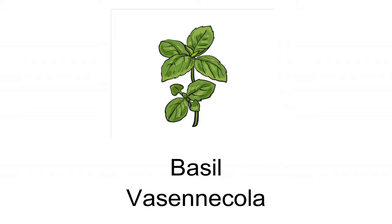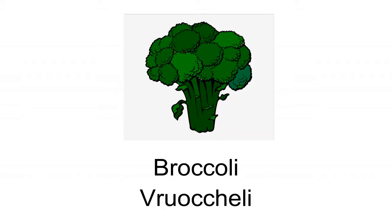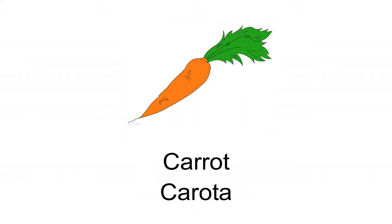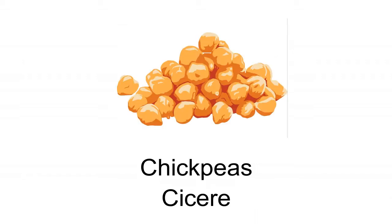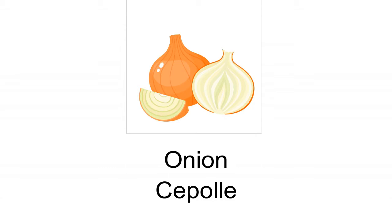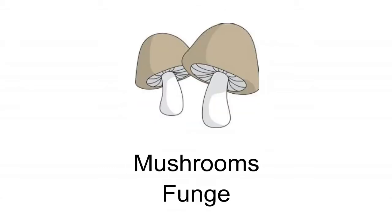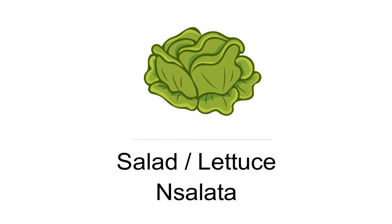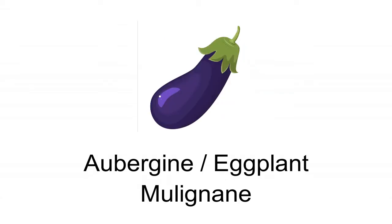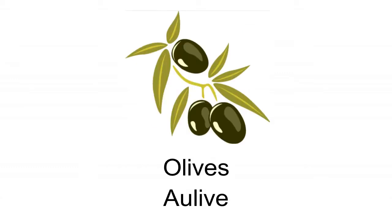Vegetables and herbs vocabulary: Basil — Vasincolo. Broccoli — Broccoli. Carrot — Carota. Chickpeas — Cicerchie. Onion — Cipolla. Beans — Fagioli. Mushrooms — Funghi. Salad/Lettuce — Zalata. Aubergine/Eggplant — Molignane. Olive — Olive.